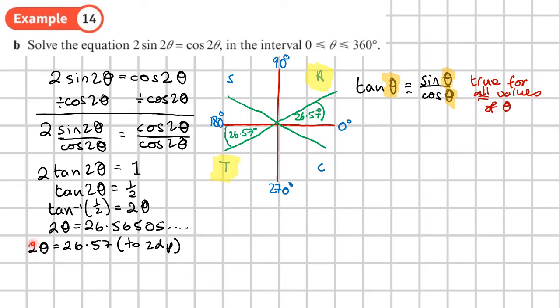Because of this 2 theta, this means that we go around the CAST diagram twice. So when I go around like this, I'm not going to stop when I get back here, which would be 360. I keep going until I've done two full turns. That's what the 2 tells me.